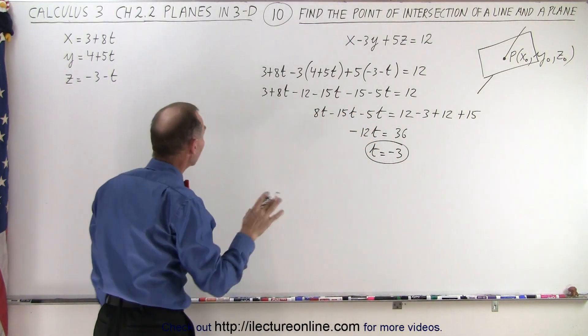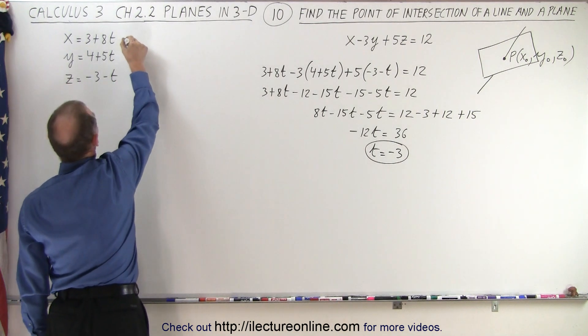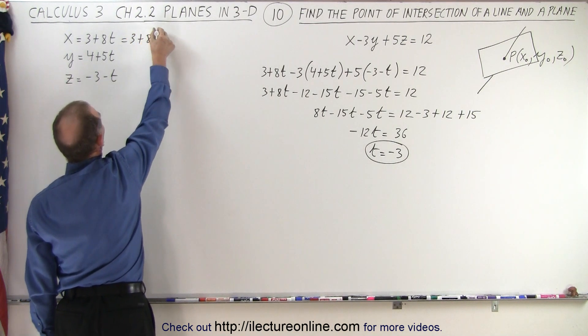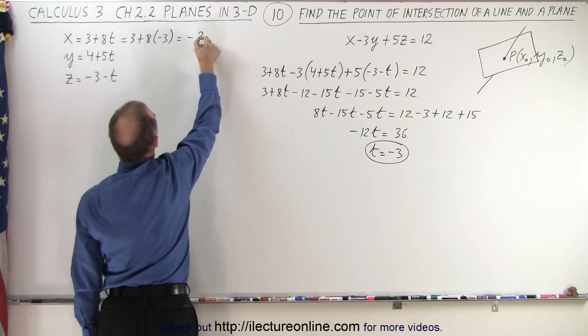Now that we know what t is, we can solve for the three variables x, y, and z. So x becomes 3 plus 8 times the negative 3, which is equal to negative 24 plus 3, which is negative 21.